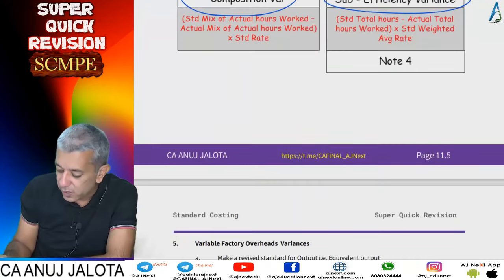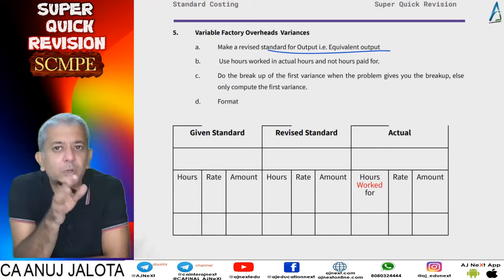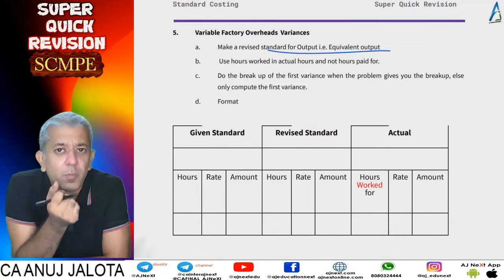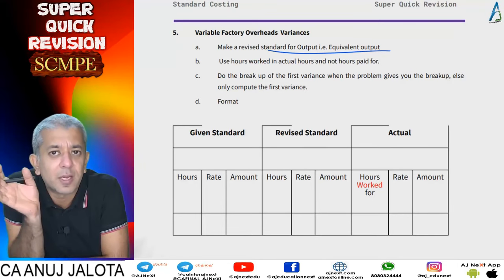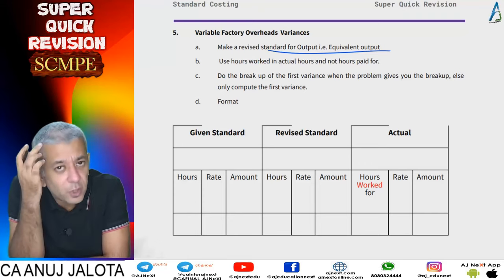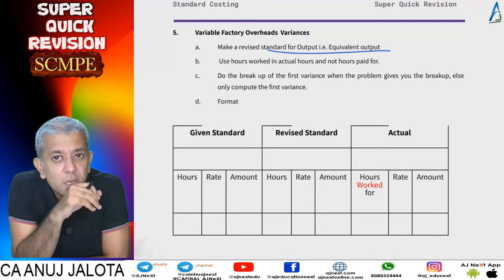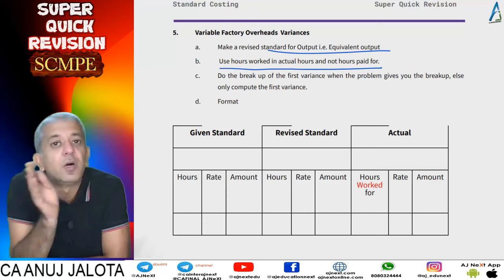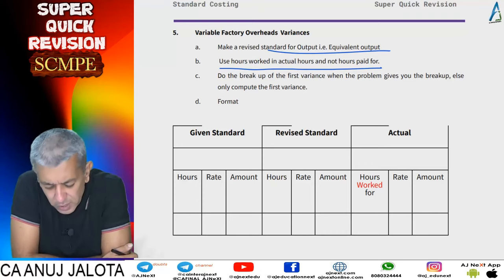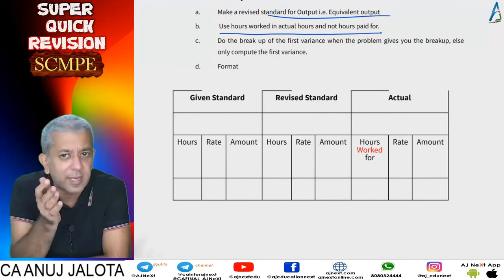Now moving to variable factory overheads. Like material and labor, variable factory overheads depend upon output — equivalent output. If equivalent output is not directly given, remember to make your statement of equivalent output. Variable overheads, such as electricity, are incurred whenever workers actually work, so please use hours worked and not hours paid for.